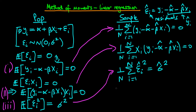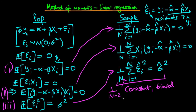This third moment condition gives a consistent estimator for sigma squared, but it is biased. To make it unbiased we would replace one over n with one over n minus two. Furthermore, the first and second sample moment conditions are exactly the same first-order conditions obtained via ordinary least squares. So OLS is actually a type of method of moments estimator when errors are normally distributed. And since maximum likelihood also equals OLS with normally distributed errors, maximum likelihood is likewise equivalent to method of moments in this case.